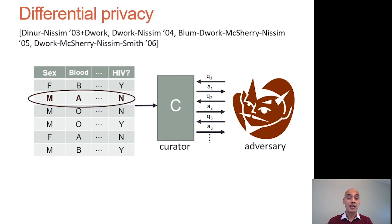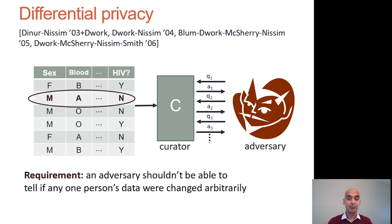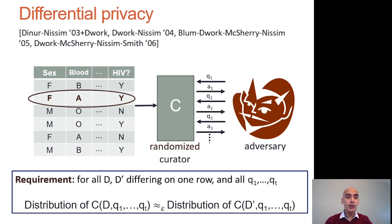In more detail, differential privacy requires that even if an adversary is interacting with the system and choosing queries to try to learn about a specific individual, what it sees should be essentially the same as if we had removed that individual's data and replaced it with arbitrary other values. More precisely, for any two data sets that differ on one individual's data, the probability distribution of results seen by the adversary should be essentially the same. How close these probability distributions are is given by the privacy loss parameter, often denoted epsilon. The smaller epsilon is, the greater the level of privacy protection, and hence the greater amount of noise that needs to be introduced.